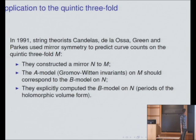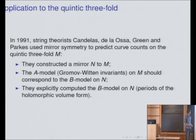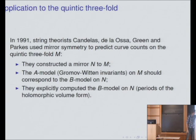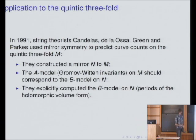In 1991, mathematicians got really excited about this mirror symmetry phenomenon because string theorists Candelas, de la Ossa, Green and Parkes used mirror symmetry to actually do something: to predict curve counts on the quintic threefold. Using physical arguments, they constructed a mirror N to the quintic threefold M. Under mirror symmetry, the A model — which is these Gromov-Witten invariants — should correspond to the B model on this mirror they constructed.